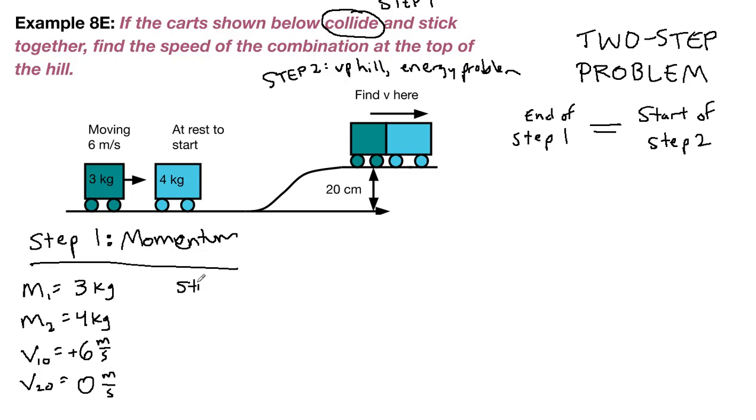Now, they stick together. So the final velocity of number 1 is going to be equal to the final velocity of number 2, and it's going to be equal to just a generic final velocity for step 1 specifically. So we should write down momentum conservation, and that should be something that we're getting used to doing for all of our collisions.